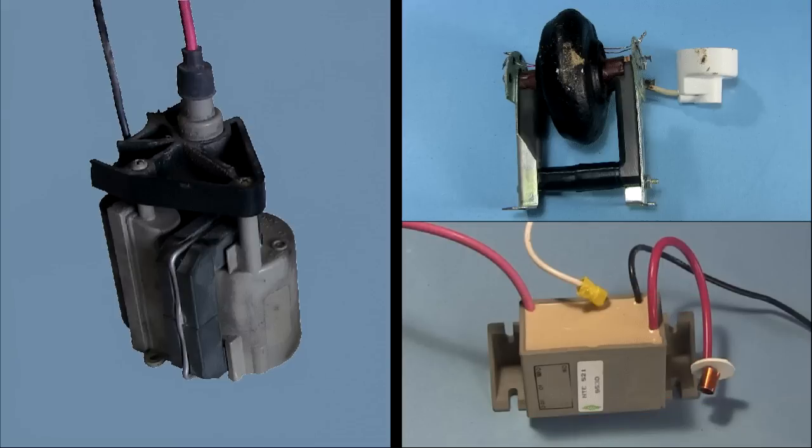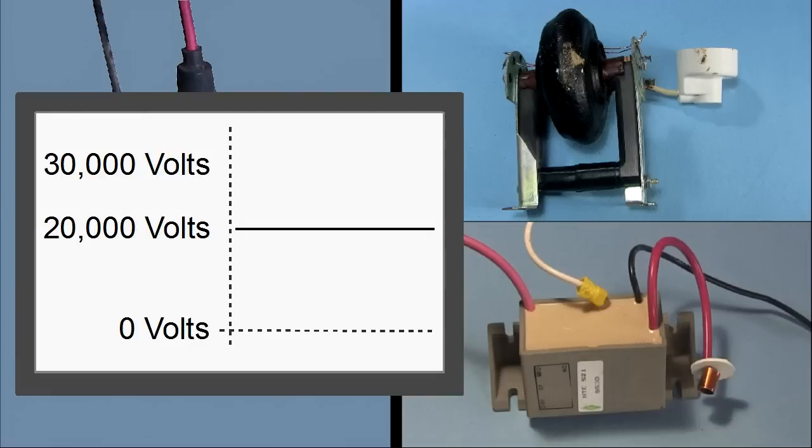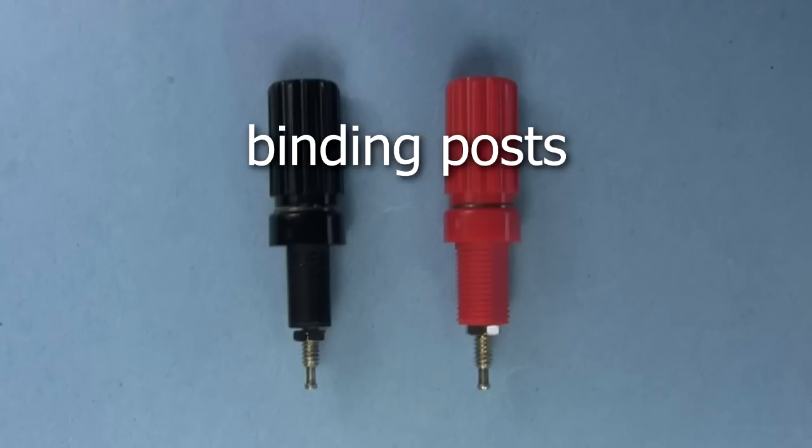So I didn't use a multiplier this time. The other thing the multiplier did was step up the voltage, so I don't get as high a voltage from this power supply. And finally, I used these two binding posts for connecting to external power.